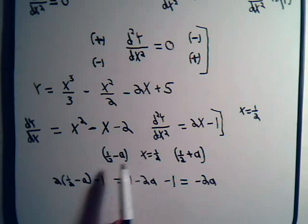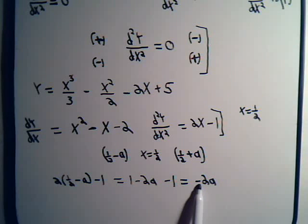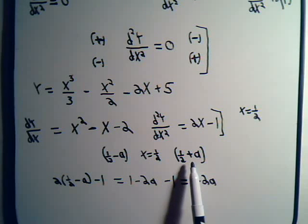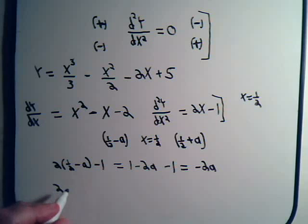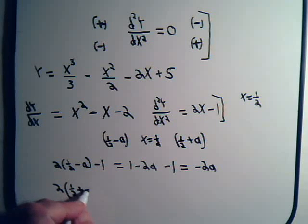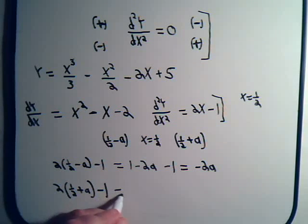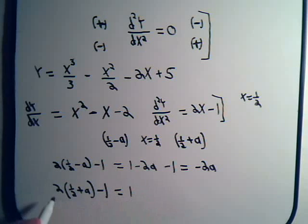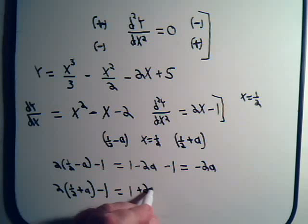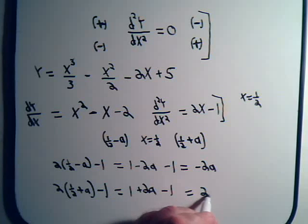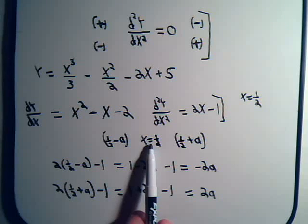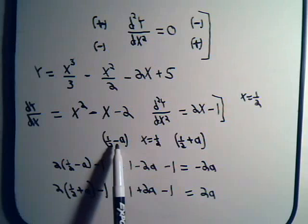So the second derivative on the left side of this point is a negative quantity. Now on the right side, we have 2(1/2 plus a) minus 1, which equals 1 plus 2a minus 1, which equals positive 2a. So here's our potential point of inflection where the second derivative is zero.